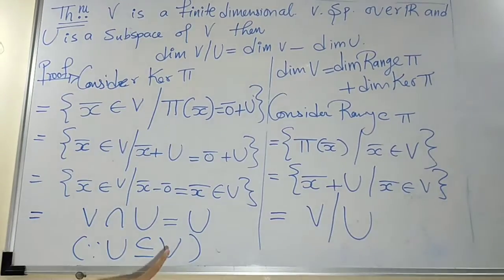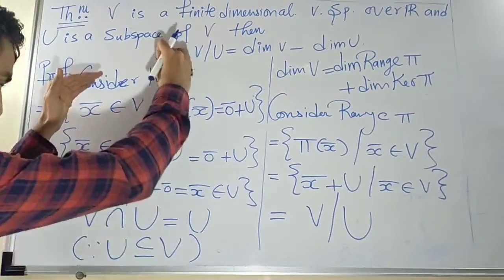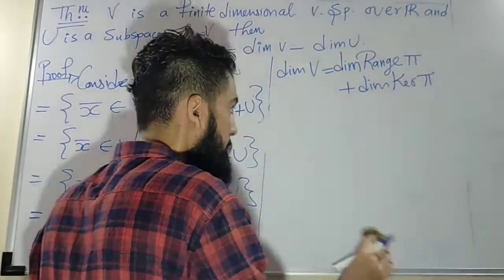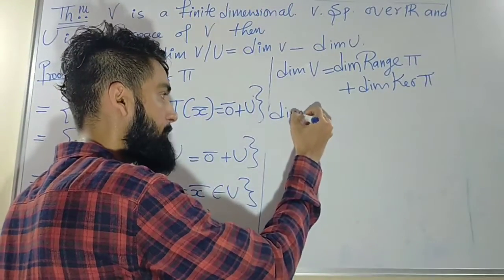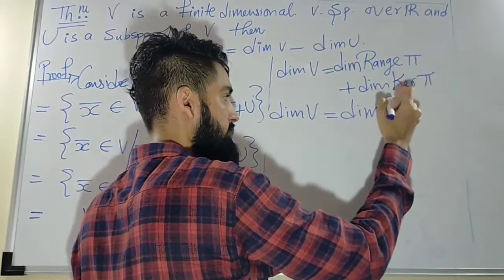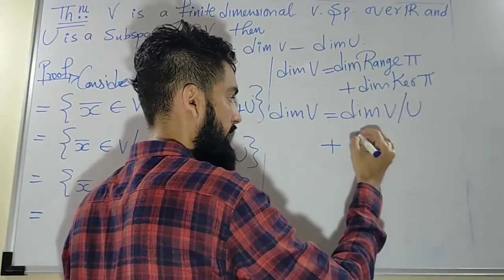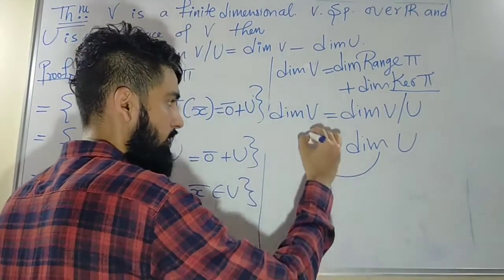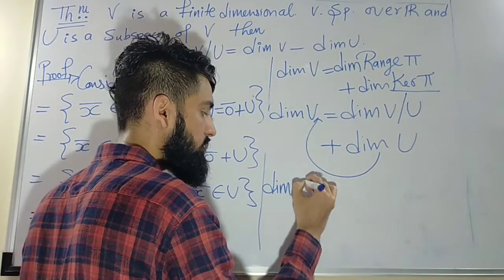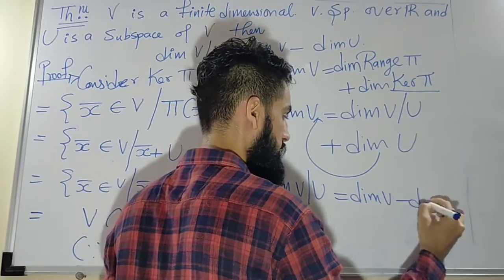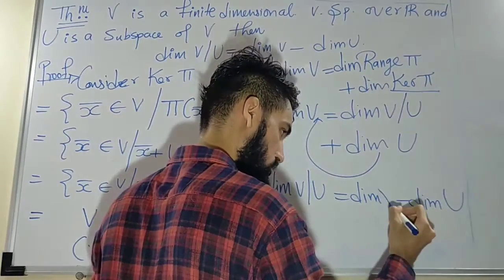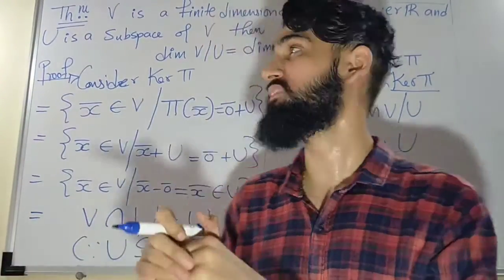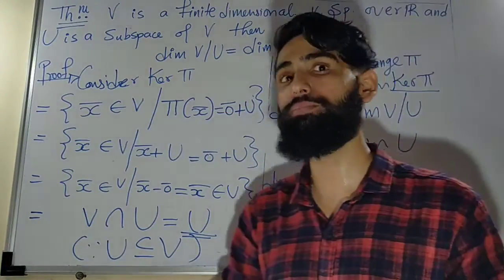We found that the range of π is V/U and the kernel of π is U. Substituting into the rank-nullity equation: dimension of V equals dimension of V/U plus dimension of U. Rearranging, dimension of V/U equals dimension of V minus dimension of U. By using the quotient map, we have easily proved the theorem.